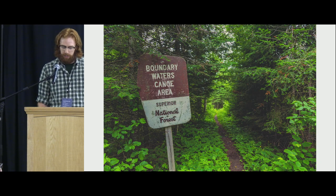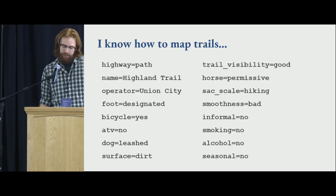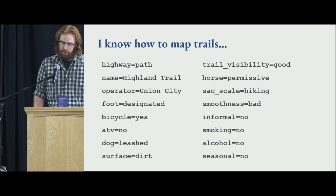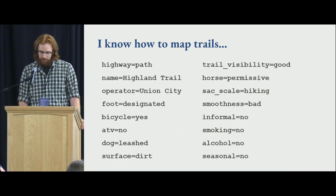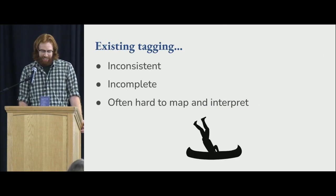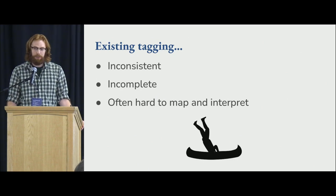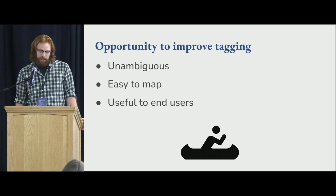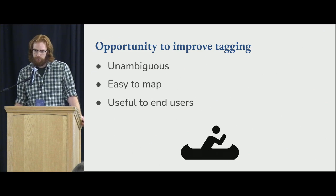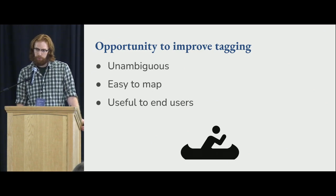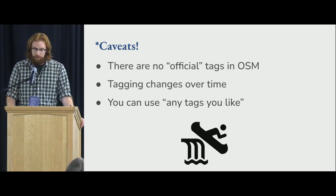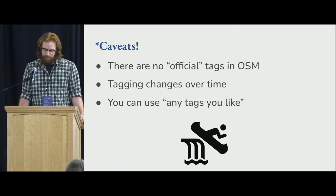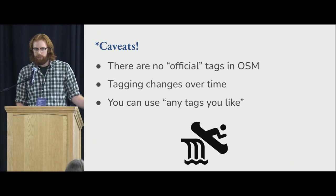This inspired me to ask: we have these different trail conservancies with information about their water trails, but how do we map this in OpenStreetMap? I know how to map trails on land — OpenStreetMap has keys and values to designate different attributes — but how do we map water trails? Existing tagging I found has been inconsistent, incomplete, and often hard to map and interpret. People have been trying to map these for over a decade, but we want tagging that is unambiguous, easy to map, and useful to end users such as trail apps, renderers, or routers. There are no official tags in OpenStreetMap and the tagging could change over time, so you may want to check the latest guidance.